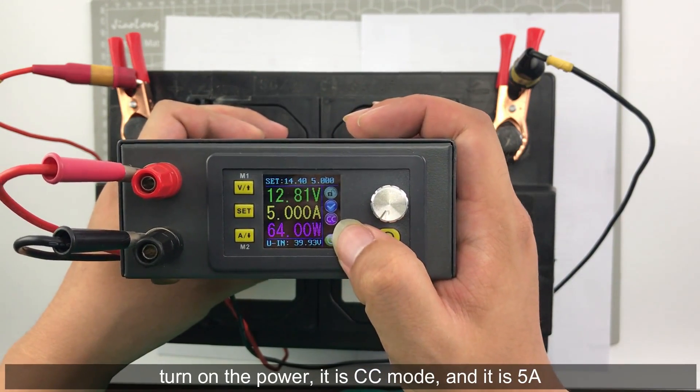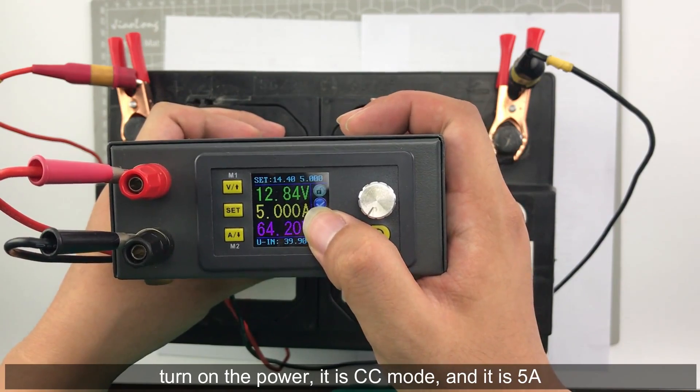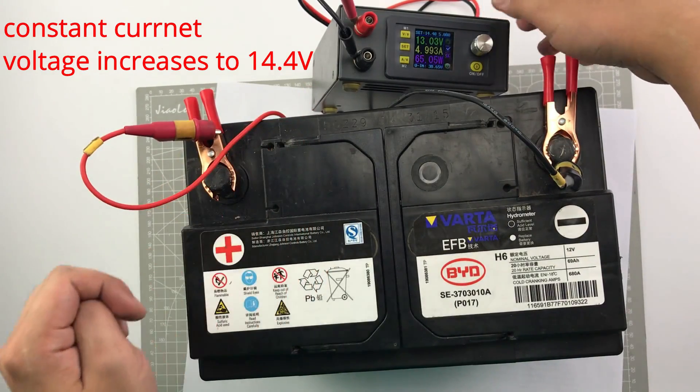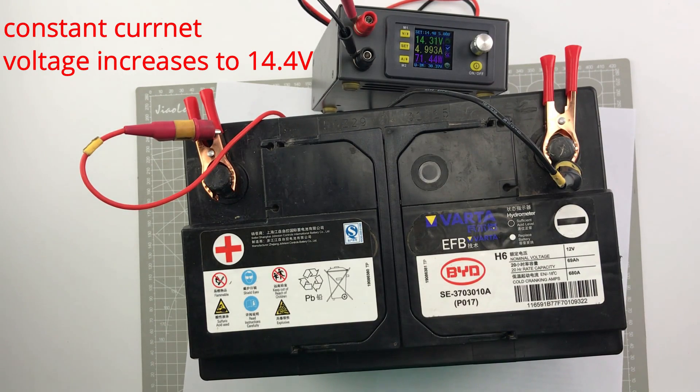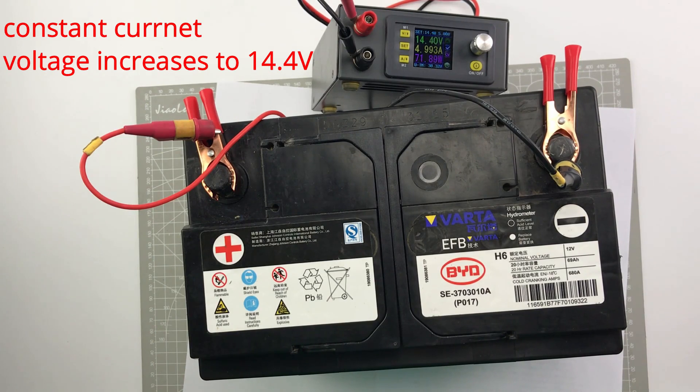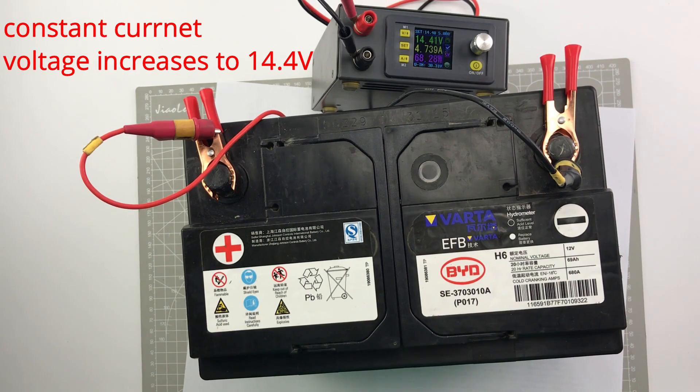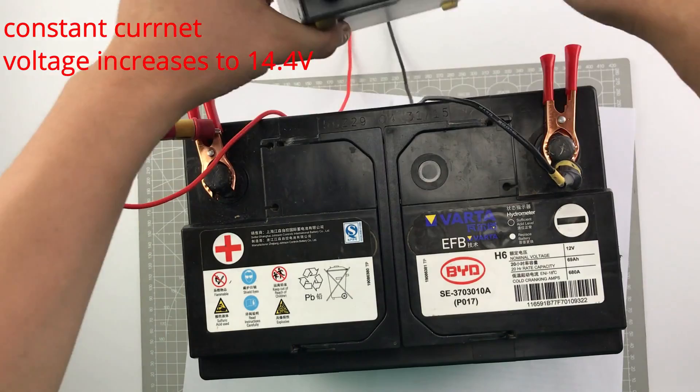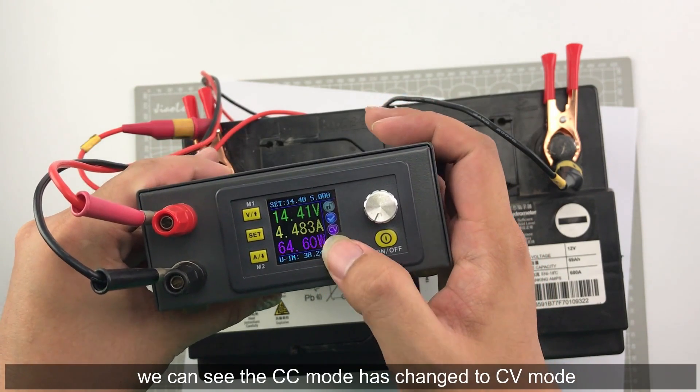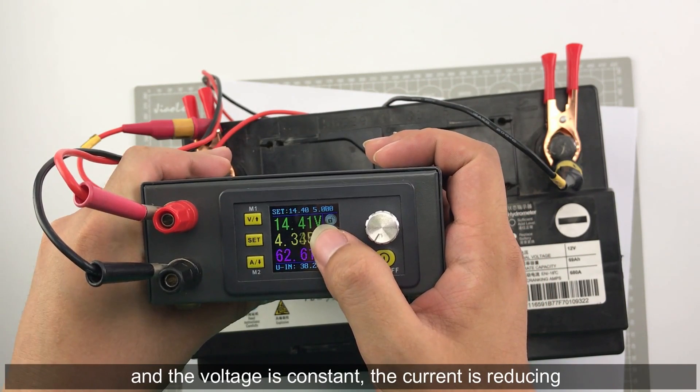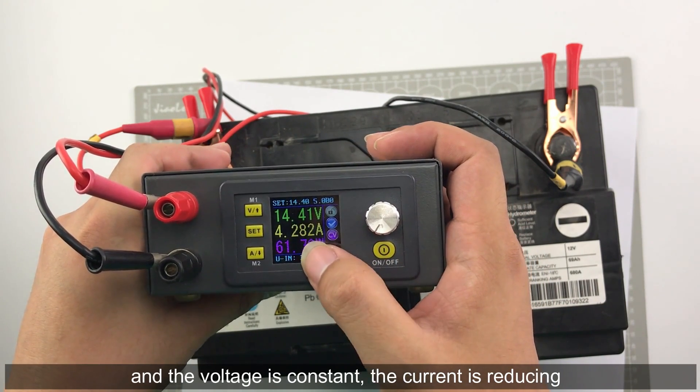You can see at first it is CC mode and the current is 5 ampere. We can see the CC mode has changed to CV mode, and the voltage is constant. The current is reducing.